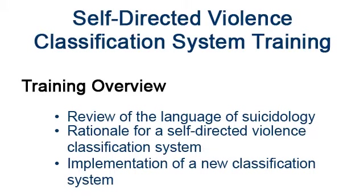Before teaching the nomenclature, I'd like you to take a pre-test to illustrate the difficulty of accurately describing self-directed violent thoughts and behaviors, particularly when we all talk about suicide and self-harm differently. Following the pre-test, we're going to discuss the new self-directed violence nomenclature, which encompasses the range of both suicidal and non-suicidal self-directed violent thoughts and behaviors. After reviewing the concepts and working through a few vignettes together, I'll ask you to complete a post-test so you can assess your ability to utilize the system in your clinical work.